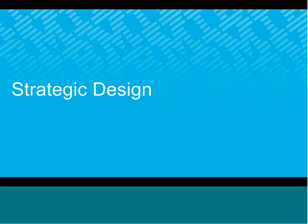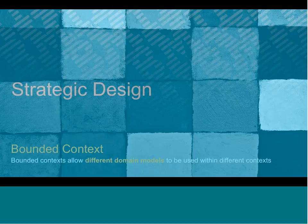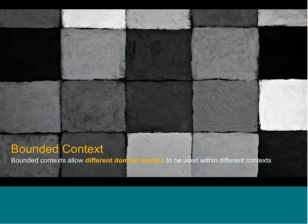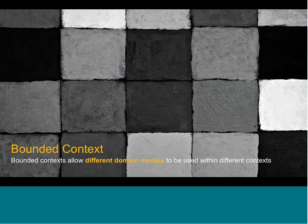Strategic design is when we start thinking about teams and systems — how we actually have multiple models in very complex systems and need to be strategic about how we design the overall system. One tool that's really helpful is the idea of a bounded context, which allows us to have different domain models within different contexts. For example, a 'person' might not always mean exactly the same thing in different domains. 'Customer' could mean something different in a different domain. Bounded contexts give us a space in which we can have a clean model — we can say 'a person means this within this context.'